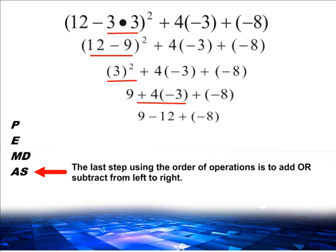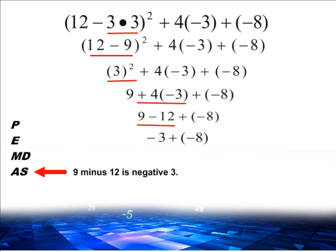9 minus 12 is negative 3. After writing negative 3 underneath 9 minus 12, we are going to bring down plus negative 8.